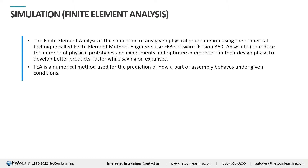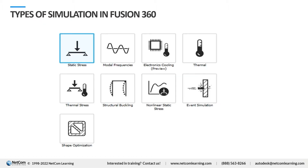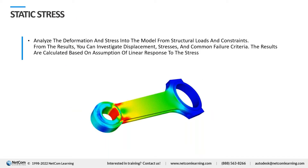Now let's look at the types of simulations available in Fusion 360. The first one is static stress. Static stress assumes the relationship between the applied load and its structural responses is linear, and the material follows elastic behavior. We can perform this analysis in Fusion 360.